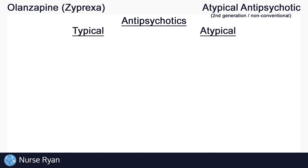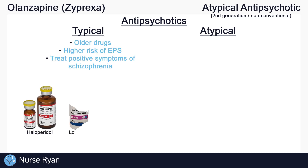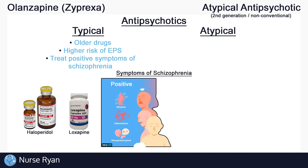Typical antipsychotics are also known as first-generation or conventional antipsychotics. They are the older drugs which can be highly effective, but have a higher risk of causing side effects, especially extrapyramidal symptoms or EPS, which we'll talk about more later on. Typical antipsychotics are used in the treatment of positive symptoms of schizophrenia, which are thoughts, feelings, or actions that are added onto a person's regular behaviors.